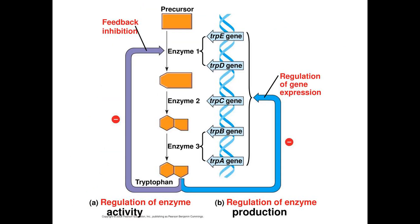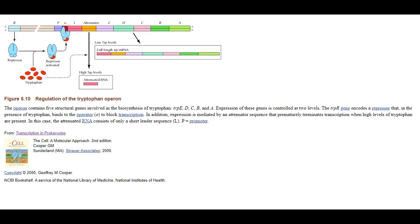Also, since tryptophan is both the product of the pathway as well as the co-repressor, it forms a negative feedback loop, regulating its own production. Furthermore, even if transcription is initiated despite the active repressor, transcription of the TRP genes is often stopped prematurely when tryptophan is abundant. But how?